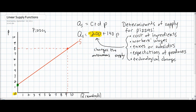For example, let's assume that there is an increase in the minimum wage rate. This will cause wage costs for pizza producers to increase and therefore cause a decrease in the supply of pizzas in the market. Higher wages for workers increase the cost of production for pizza makers and therefore decrease the supply of pizzas, leading to a decrease in the c variable in our linear supply equation.